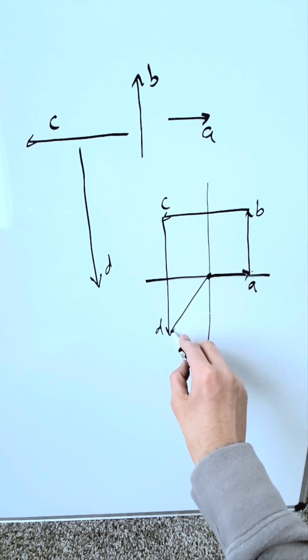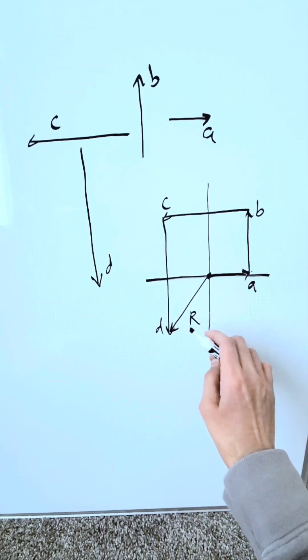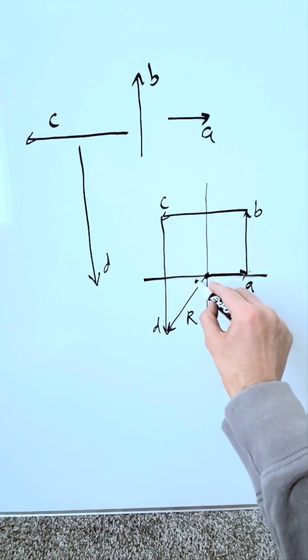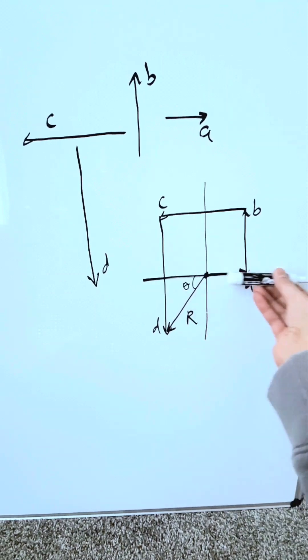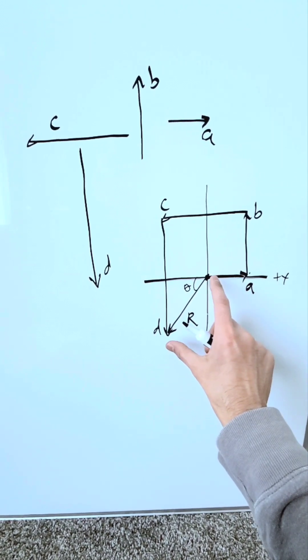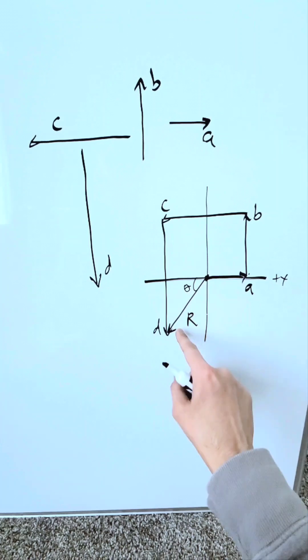Now from the origin, I'll connect to this endpoint right here, and this is my resultant. It has a certain length, that's your magnitude. It has a certain angle, which is your direction. You can adjust it to your positive x-axis here, and you can easily determine your magnitude and your direction of your resultant.